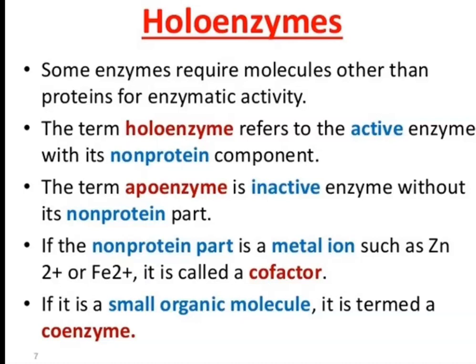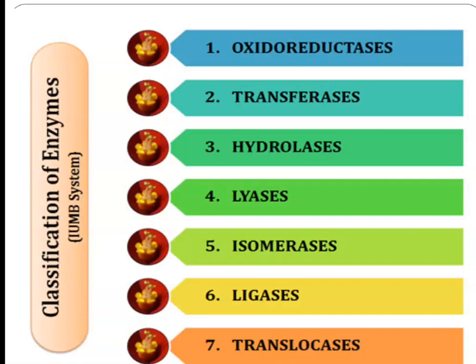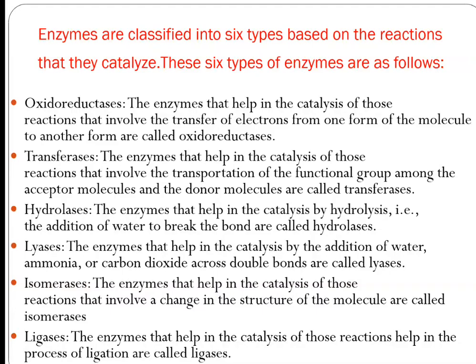If the non-protein part is a small organic molecule, it is termed a co-enzyme. Classification: there are six types of enzymes — Oxidoreductases, Transferases, Hydrolases, Lyases, Isomerases, and Ligases (Translocases). Enzymes are classified into six groups based on the reactions they catalyze.